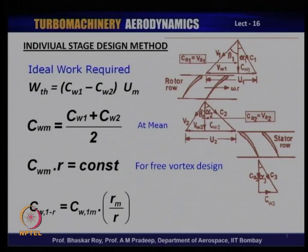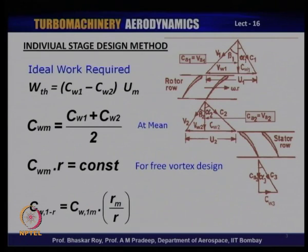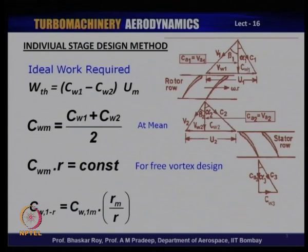This gives you the ideal or minimum amount of work that has to be put in to effect that change in whirl component, if the blade is operating at blade velocity U at that particular section. What we have on the right-hand side are the well-known velocity triangles representing a particular section, which could be the hub, root section, mean section, tip section, or any other section. For every section, you need this whole set of velocity diagrams for the rotor and stator at that particular radial station, and at that radial station you are required to find out the work done. The mean C_W through the blade is (C_W1 + C_W2) / 2, and that is the mean C_W operating on that rotor row.